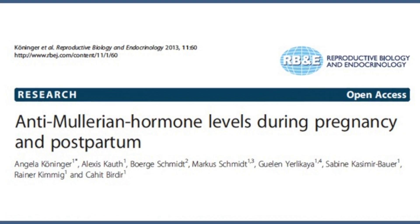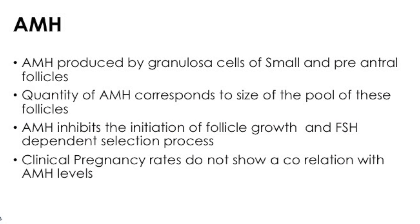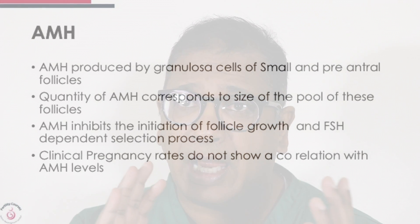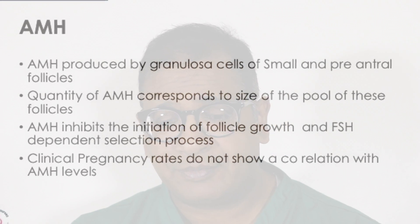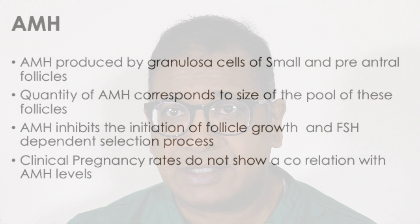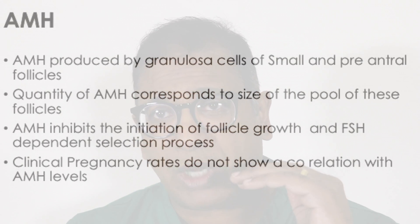AMH, the anti-mullerian hormone, is produced by granulosa cells of small pre-antral and small antral follicles. The quantity of AMH corresponds to the pool of these follicles. Most importantly, AMH inhibits follicle growth. If you understand the role of AMH, your stimulation protocols will get better. It tells you a lot about follicular resistance and granulosa cell resistance, and it is an FSH-dependent process.